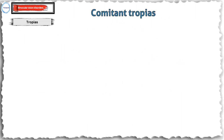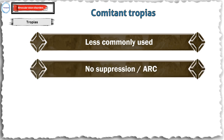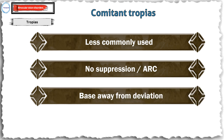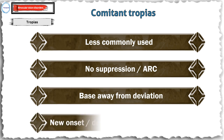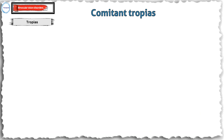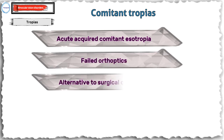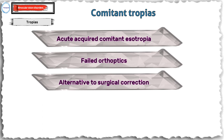The least amount of prism that eliminates symptoms should be used. Prism use in comitant tropias is less common and can be used for correction only if there is no suppression or anomalous retinal correspondence. Here again, the base is directed away from the direction of deviation. They often involve older pediatric or adult patients with new onset or decompensated strabismus. The main indications would be cases of acute acquired comitant esotropia with small deviations, or failed orthoptics as an alternative to surgical correction.